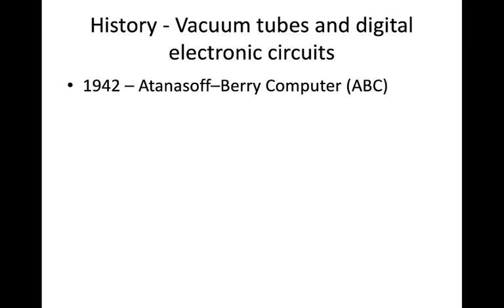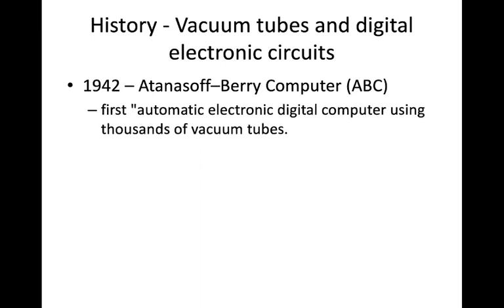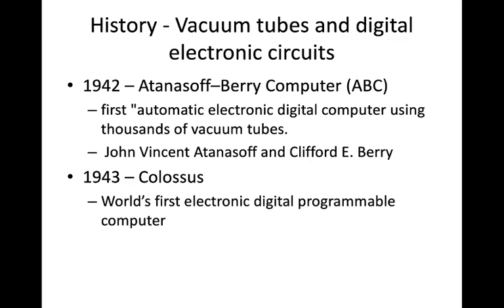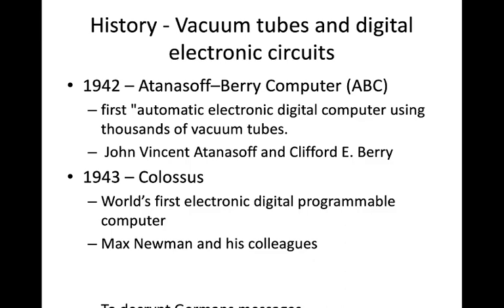When vacuum tubes came in 1942, the Atanasoff-Berry Computer (ABC) was developed — known as the first automatic electronic digital computer, using thousands of vacuum tubes. In 1943, Colossus became the world's first electronic digital programmable computer. It was designed by Max Newman and his colleagues to decrypt German messages — during the war, Germans encrypted messages and the British developed Colossus to decode or decrypt those messages.